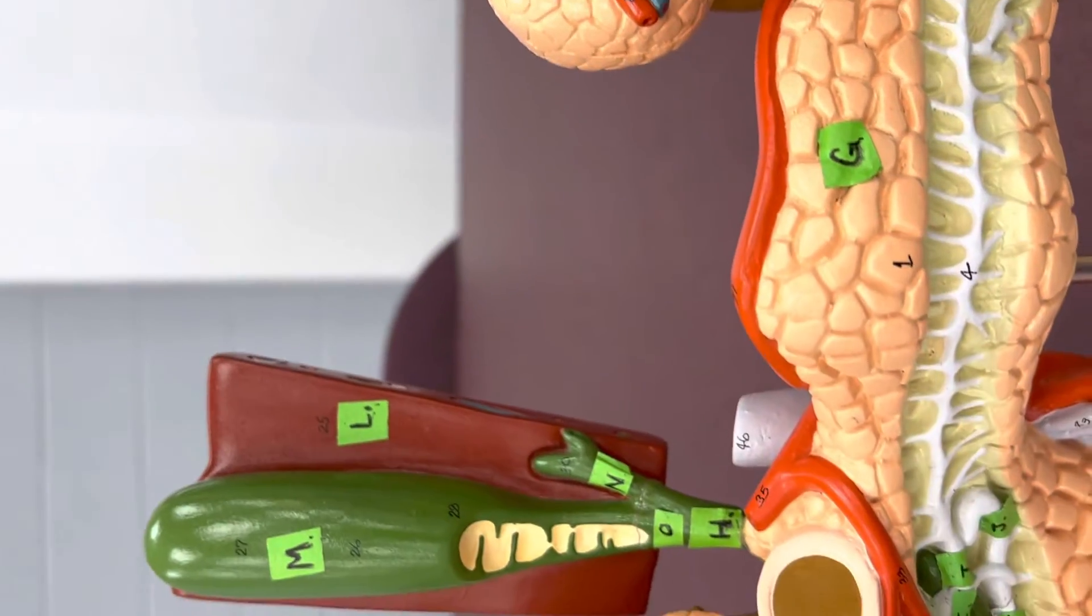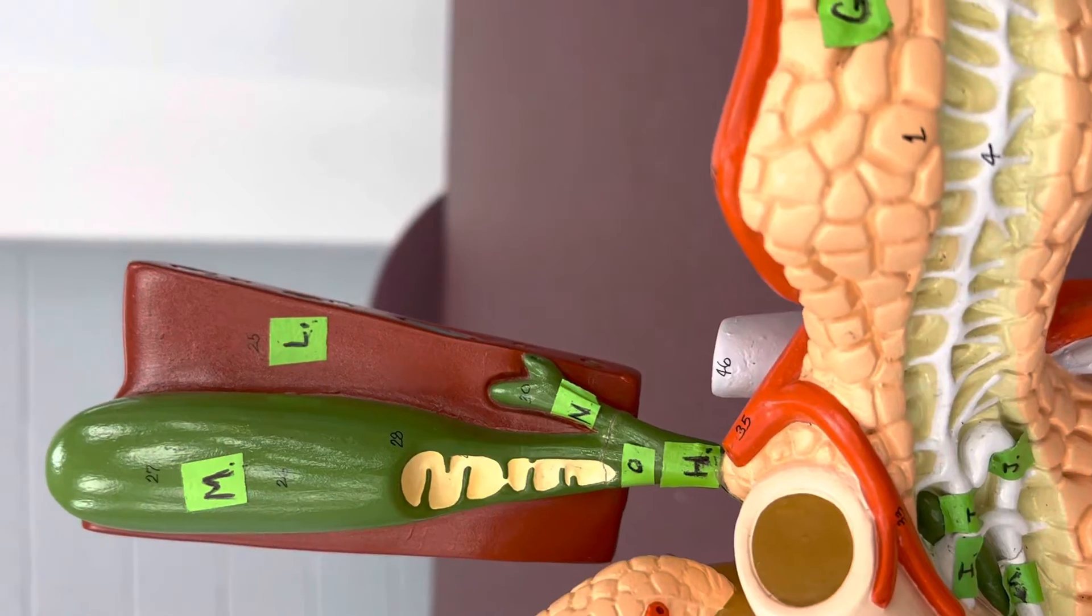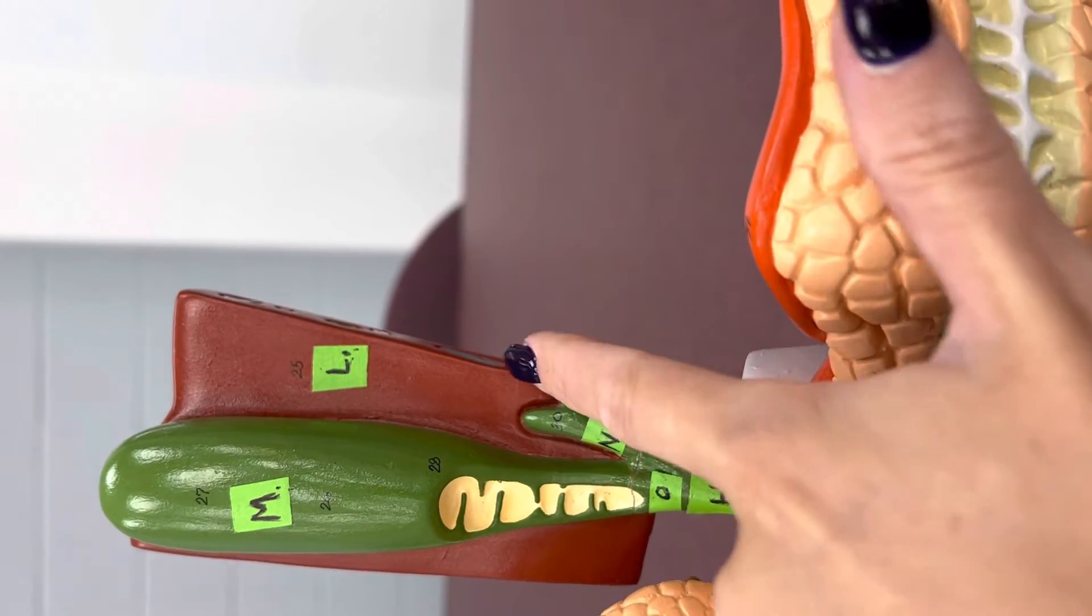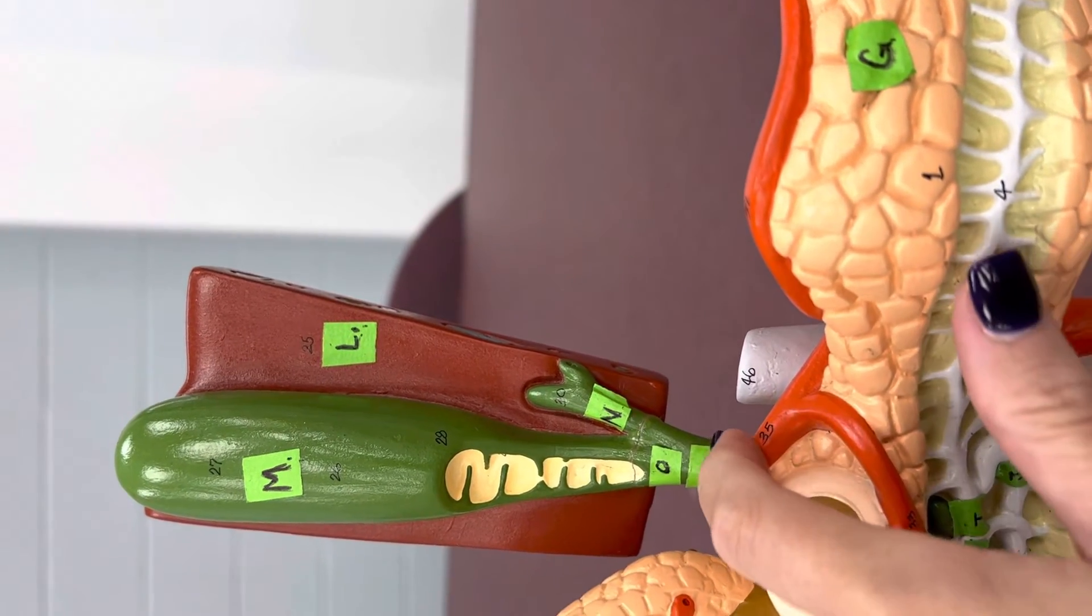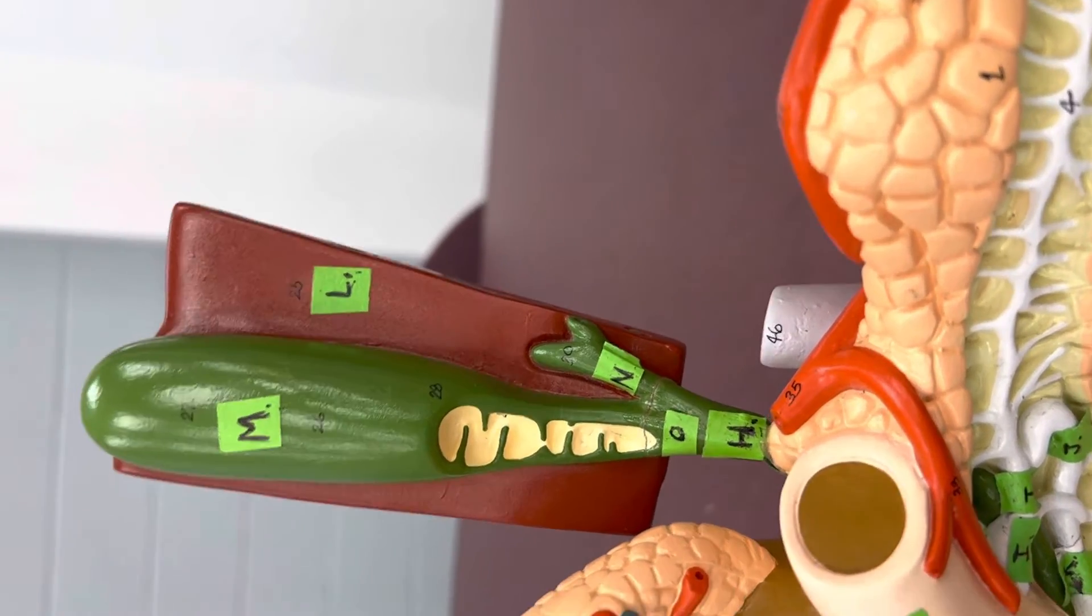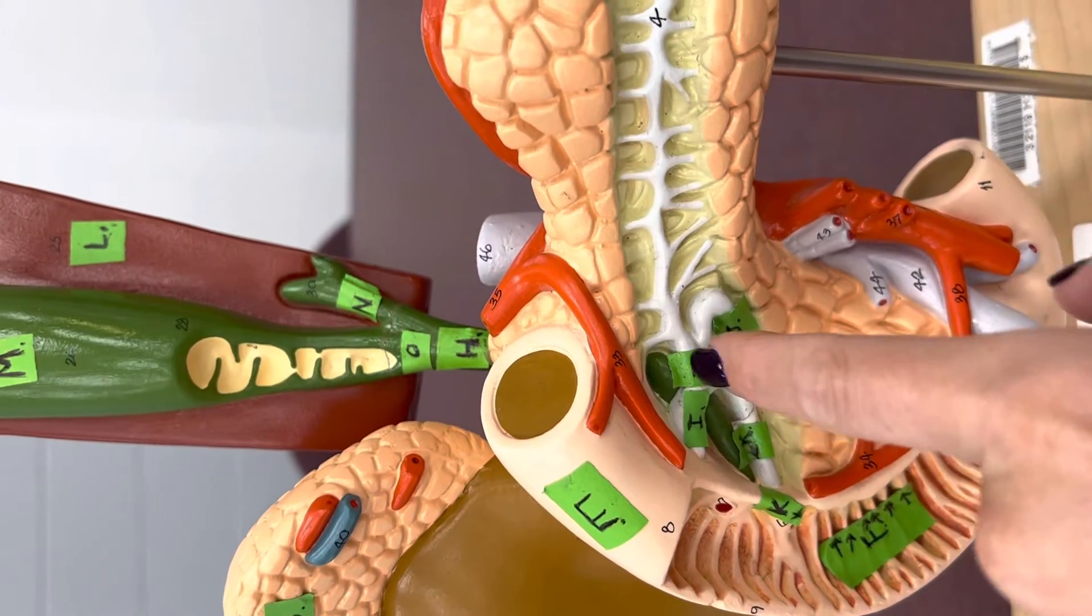L. Good choice. That's the liver. N is the gallbladder. This would be the hepatic duct, where bile is coming out of the liver. O. This is the cystic duct. Here they join together to form the common bile duct, and then that comes on down.